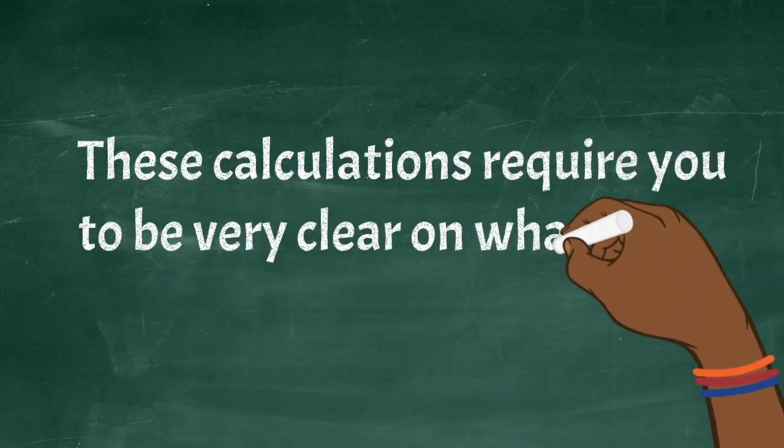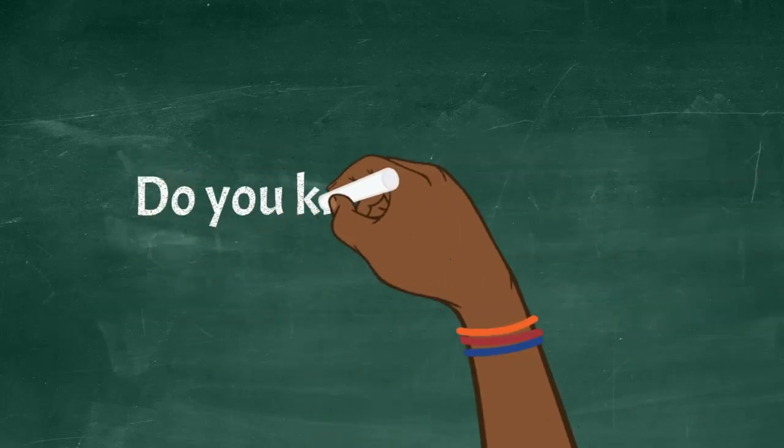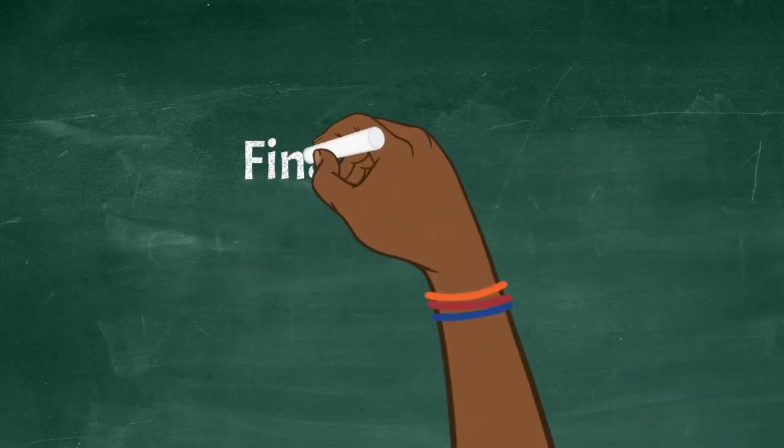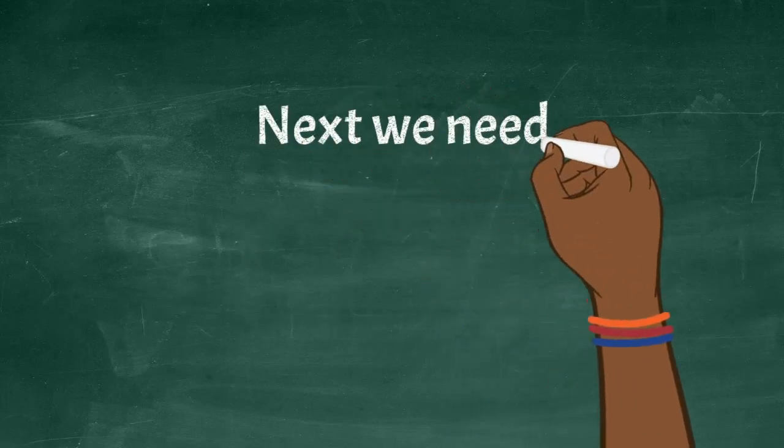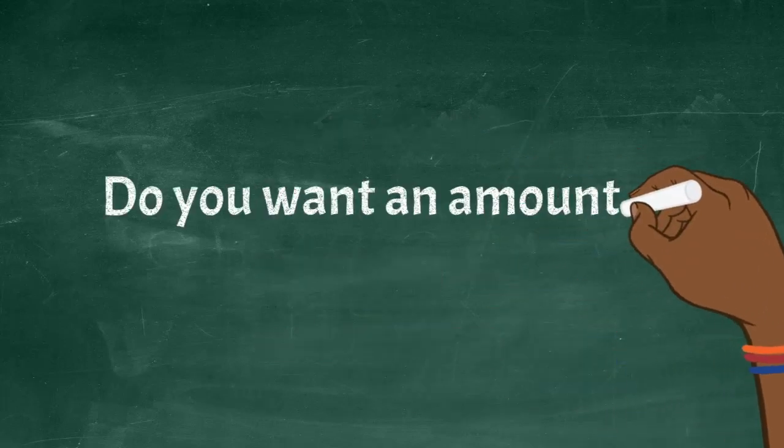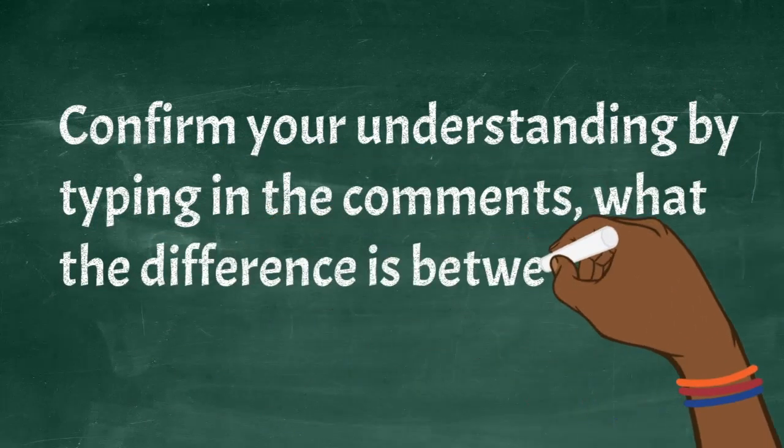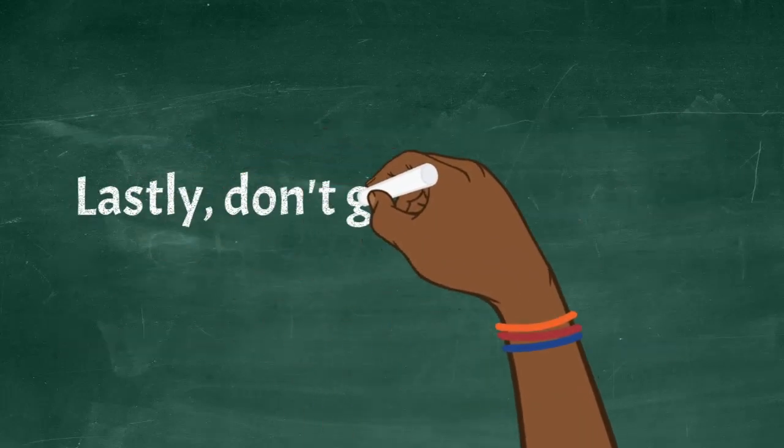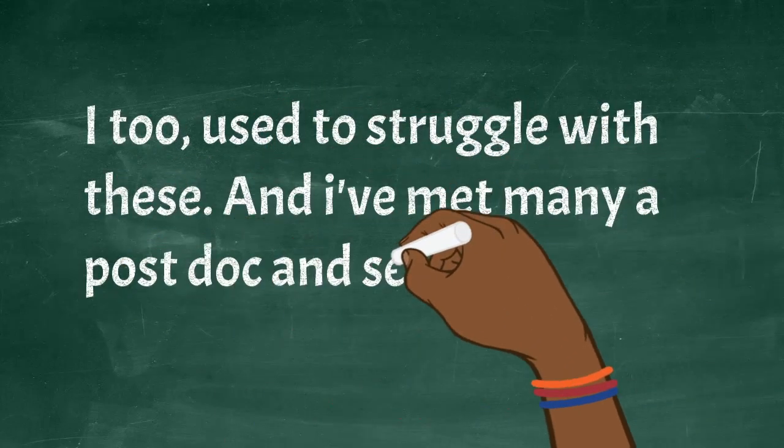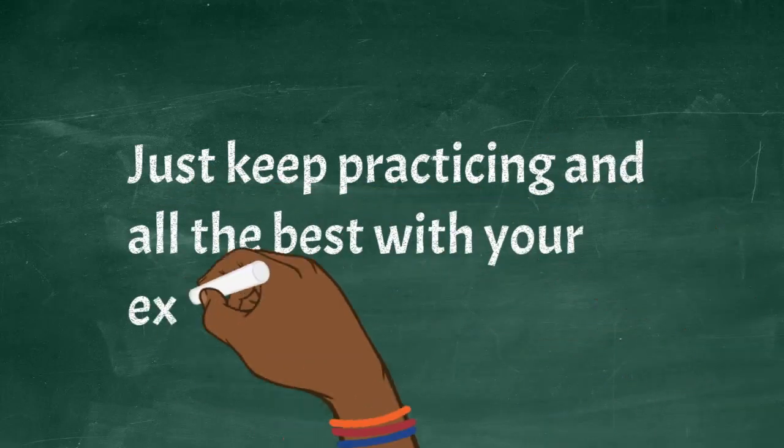In closing, these calculations require you to be very clear on what you want. Foundational to all the calculations is knowing what you are starting off with. Do you know what your current concentration is? What about your current volume? Finally, what is your total cell numbers? Next, once you have this foundational information, you need to be clear on what you are calculating. Do you want an amount or a concentration? Please confirm your understanding of the difference between an amount and a concentration in the comments. Lastly, don't give up if you find it difficult to do this calculation at first. I too used to struggle with these and I've met many postdoc and senior scientists who still struggle with these. Just keep practicing and all the best with your experiments.